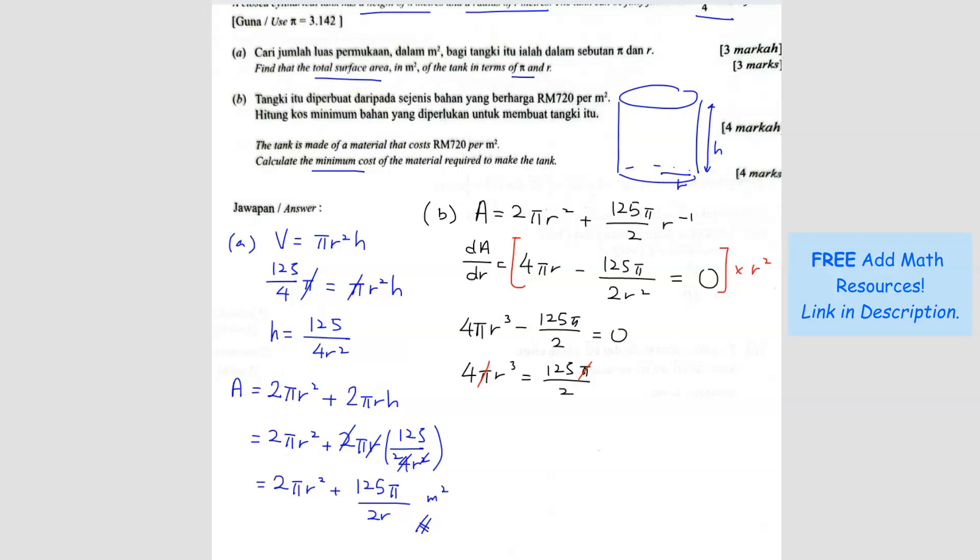R cubed equals 125 over, the 4 becomes divided, so 4 times 2 is 8. When you find r, you cube root this whole thing, you get 5 over 2. So r is 5 over 2. That means for it to be either minimum or maximum area, r is 5 over 2.